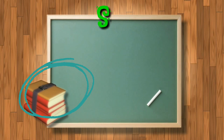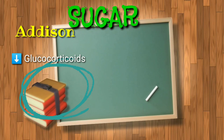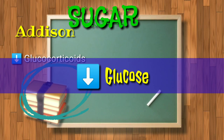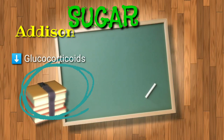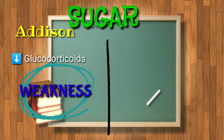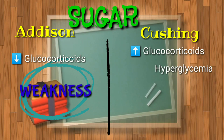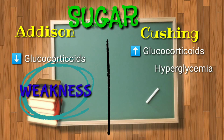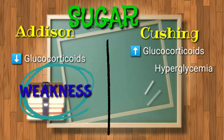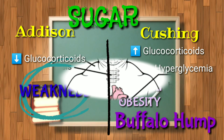Now let's proceed to the sugar. In Addison's disease, when you have decreased glucocorticoids, your glucose will also be decreased. Since glucose provides us energy, decreased glucose results in a manifestation of weakness. While in Cushing's disease, there is an increase in glucocorticoids, which results in hyperglycemia. Because of that overly produced glucose, it will be converted to fat — that's why in Cushing's disease, you'll observe truncal obesity and a buffalo hump. You may see in the picture what it looks like.